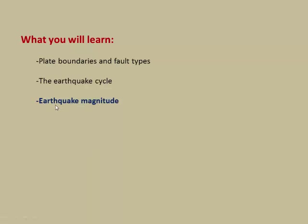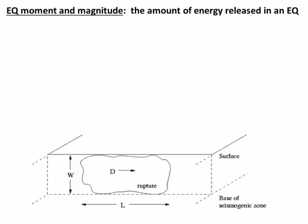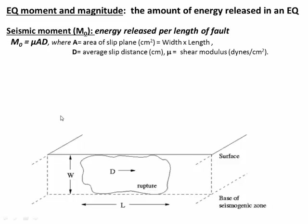Now you know something about the earthquake cycle — let's look at earthquake magnitude. This is a little technical; you don't need to know it for the exam, but you will need to know it in lab. The amount of energy released in an earthquake can be described in two ways. One way is as the seismic moment, M0, which is determined by multiplying the area of the slip plane of the fault times the average slip distance times the shear modulus. The area is the two-dimensional area of the fault plane that slipped, the slip distance D is the linear distance the fault slipped, and the shear modulus mu is basically a roughness coefficient measuring how rough the fault surface is.